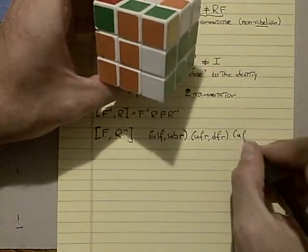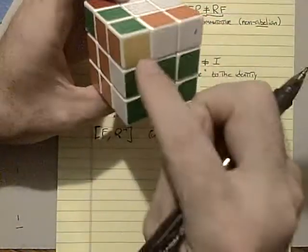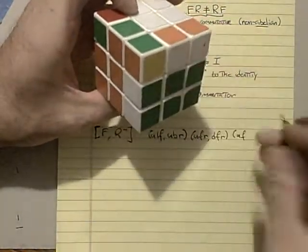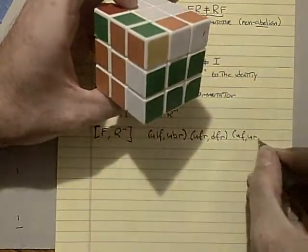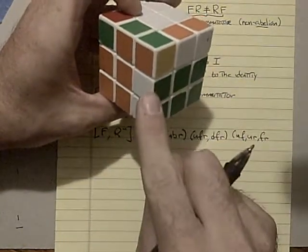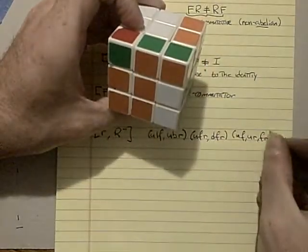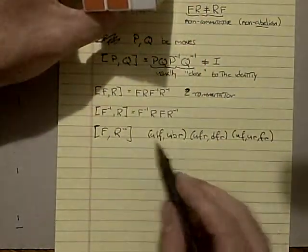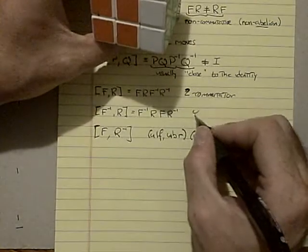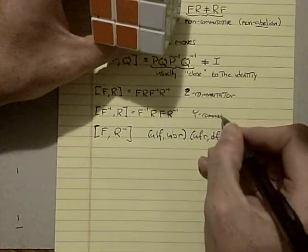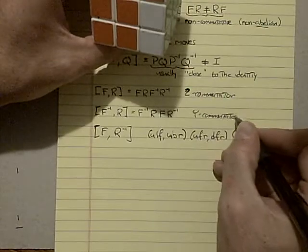So if I do up, front, white, orange. Up, front goes to up, right, which goes to front, right, which goes back to up, front. So it has a similar cycle structure as the Z commutator. And this is the Y commutator.